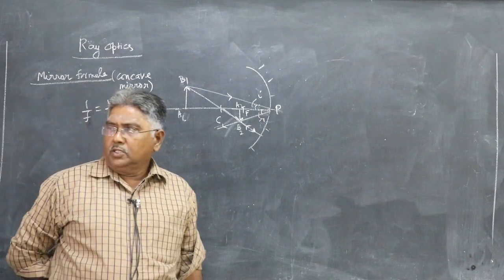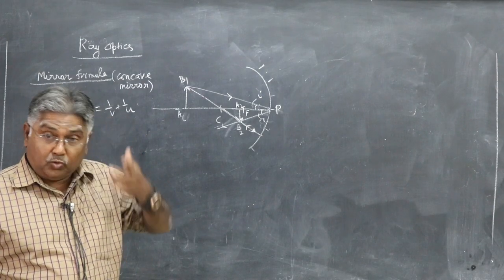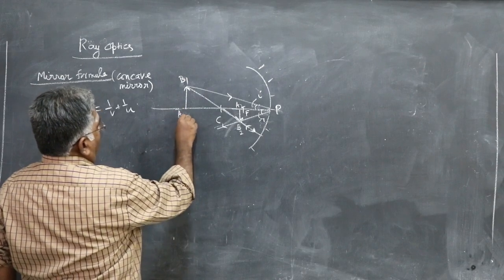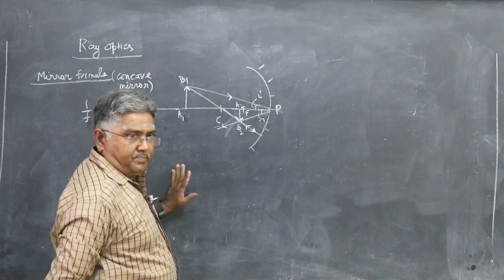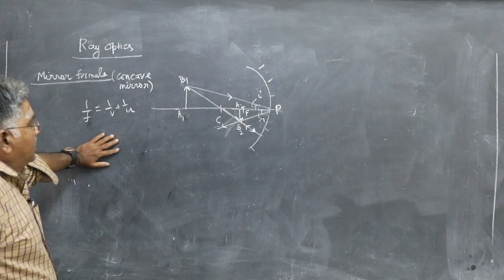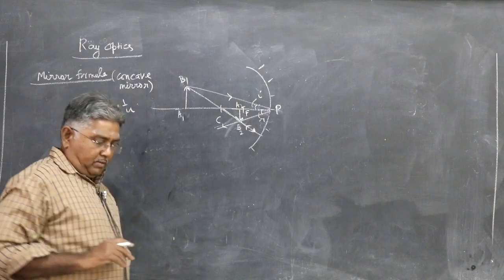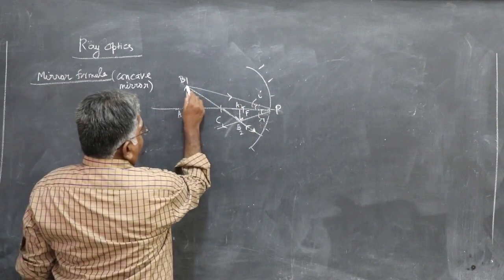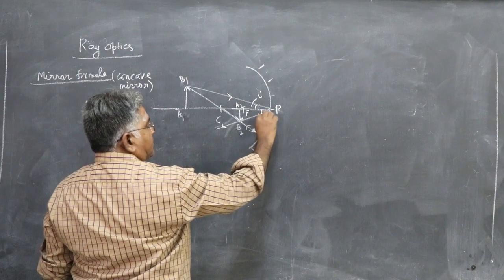To draw the image, you only need two reflected rays — that is the minimum required to draw the diagram of an image. Object A₁B₁ is placed beyond C. We take two rays; if you take more, the diagram becomes more complicated and confusing. One ray is incident on the mirror and comes back obeying the law of reflection — the angle of incidence equals the angle of reflection.